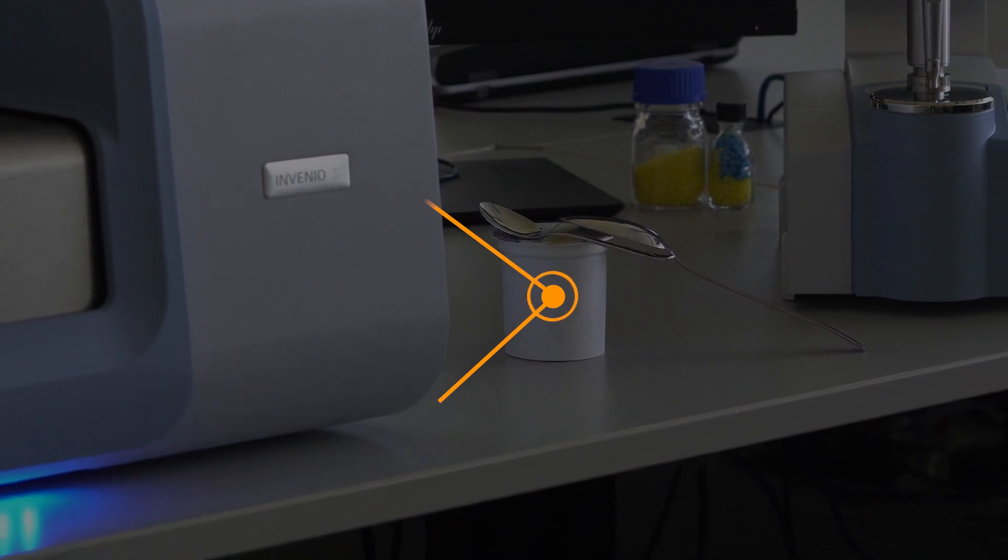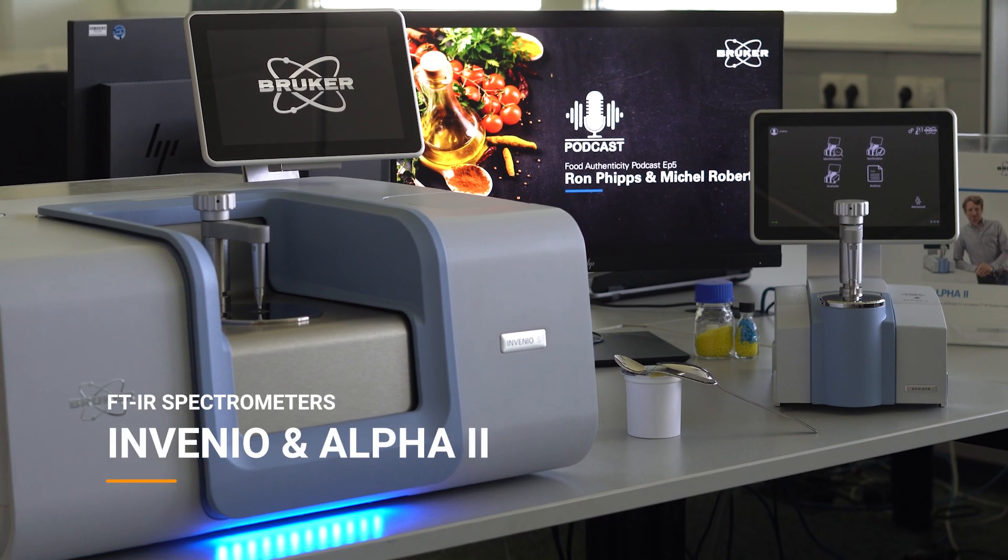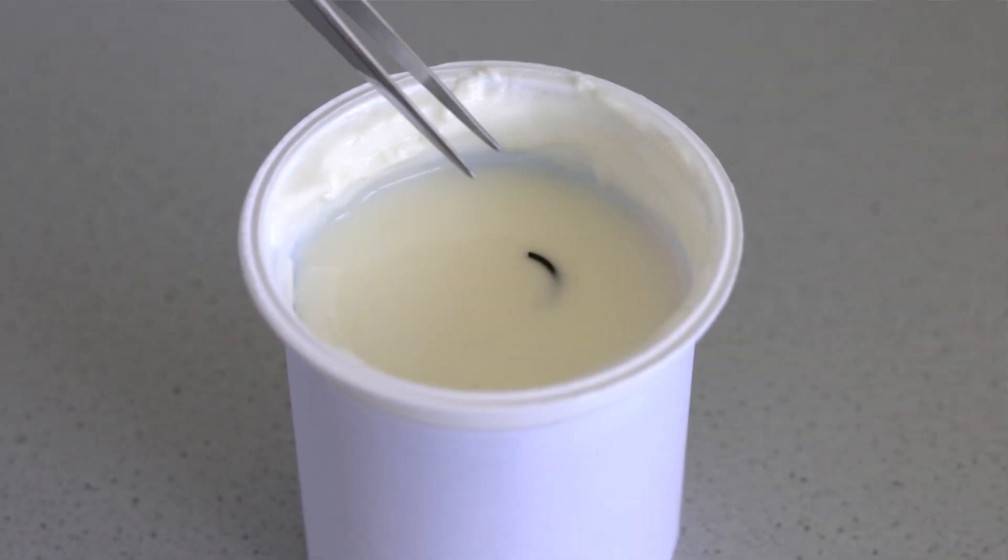For this type of chemical identification, FTIR spectroscopy is the right tool. Today we will use the Alpha 2 and Invenio spectrometers to learn more about an unknown foreign object.